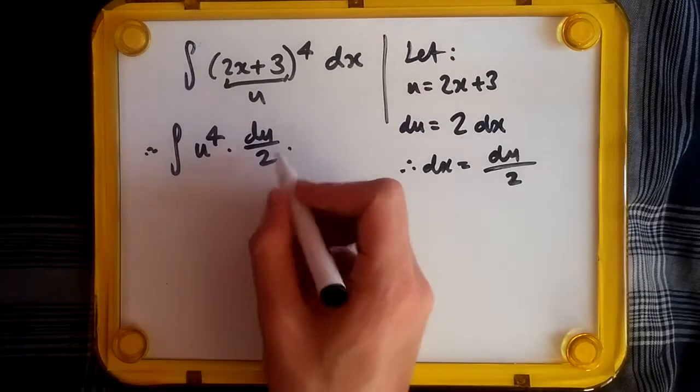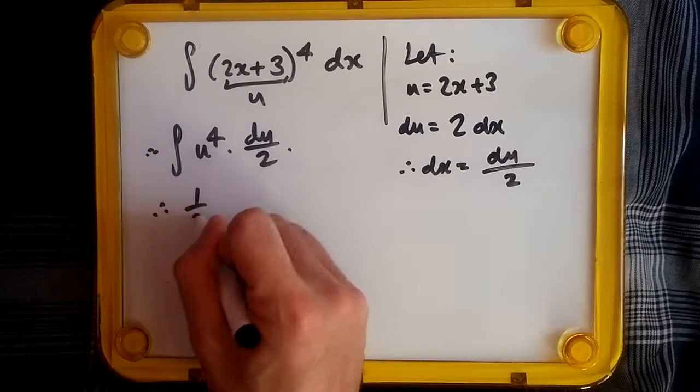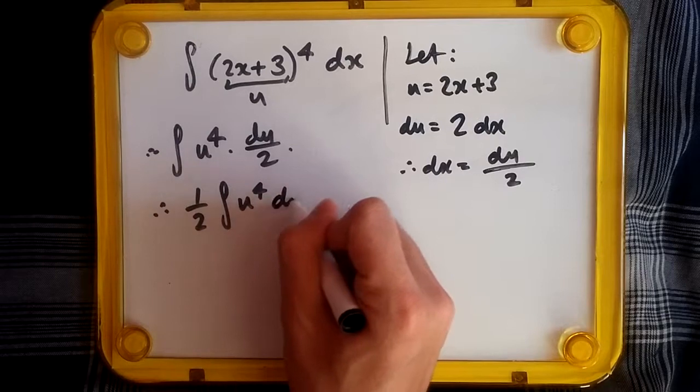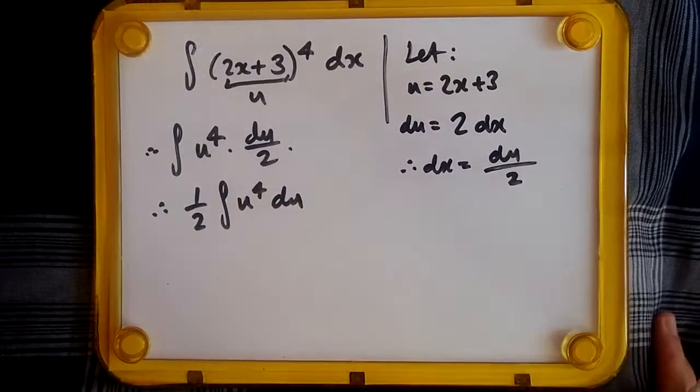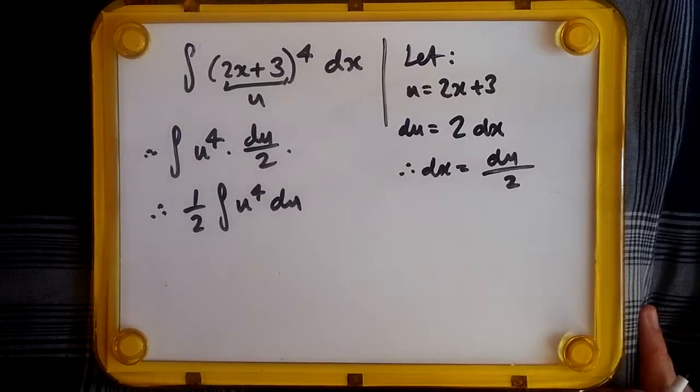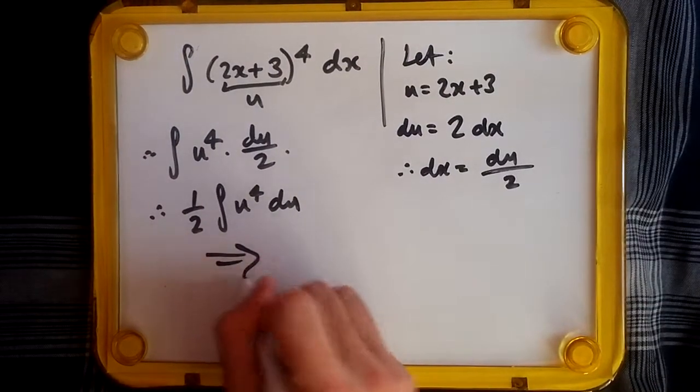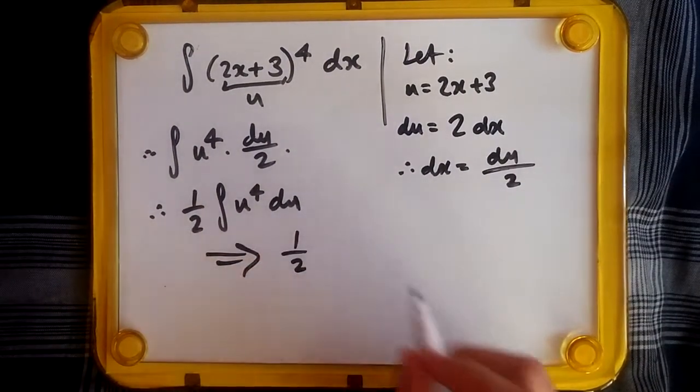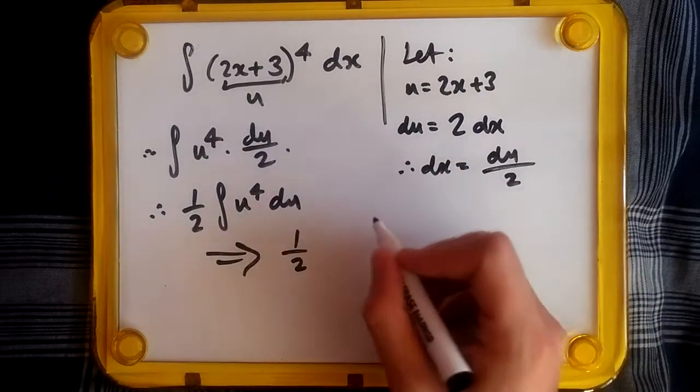Throwing the half outside, we get 1/2 integral of u^4 du. Now we have a standard power rule integral, something you learned back in C1. Ignoring the half, u to the power 4, so raising the power and dividing by it, should give us u^5 over 5.